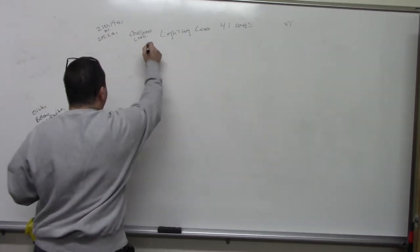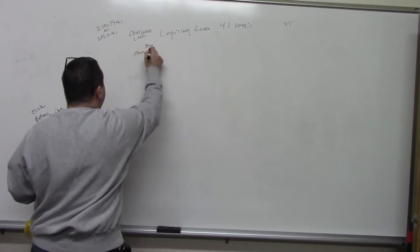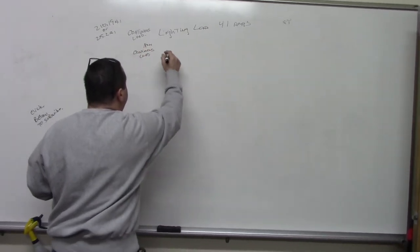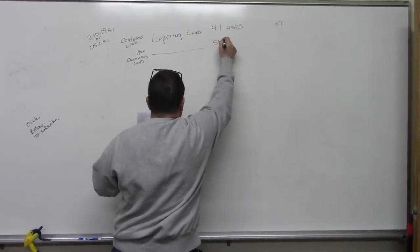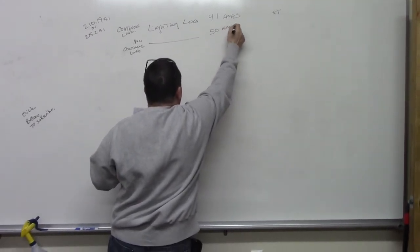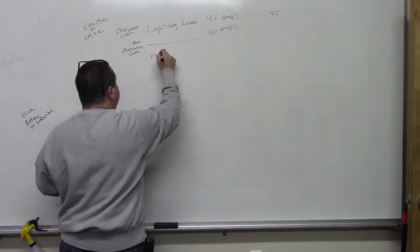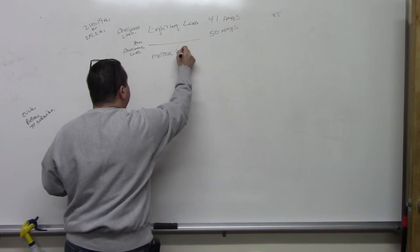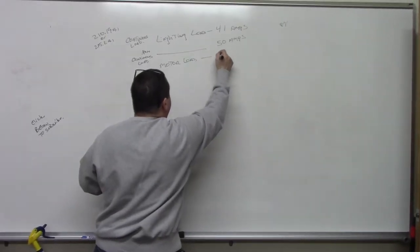The second one is non-continuous load, okay? And that is, the load for that is 50 amps, okay? And then the last one, we have a motor load, and that is 22 amps.